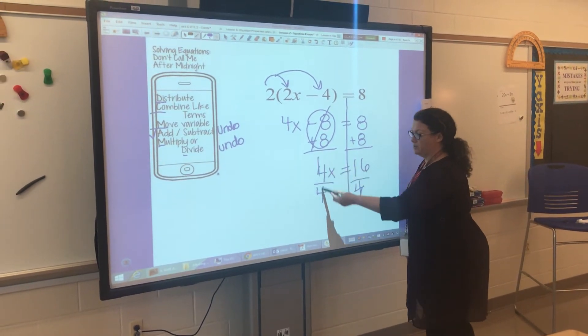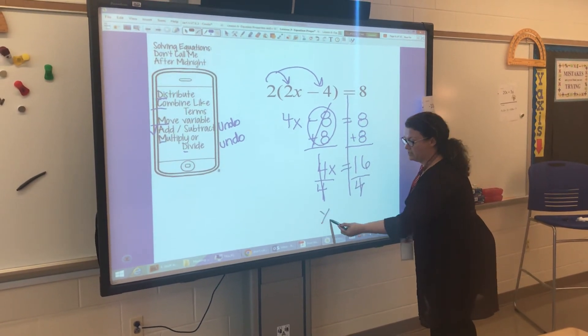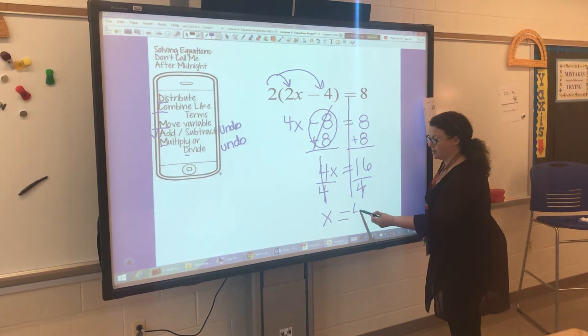4 divided by 4 is 1, so that tells me that's out of there. That's canceled out. All I have left is my x, and that's exactly what I want. 16 divided by 4 is 4.